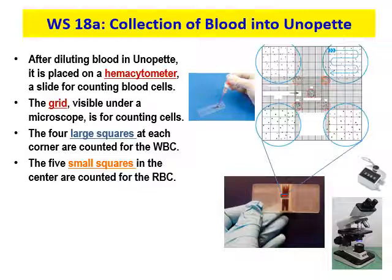The grid is visible under a microscope and is used for counting the cells. The four large squares at each corner are used for counting the WBCs, and the five smaller squares in the center are used for counting the RBCs. There's also a picture showing someone putting diluted blood onto the hemocytometer slide using the UNAPET system. We'll have more slides showing how to do it, and a video will be up later.